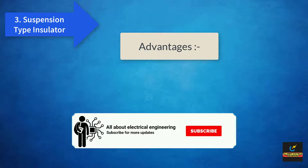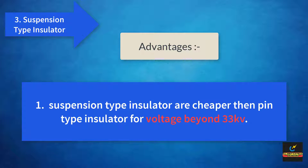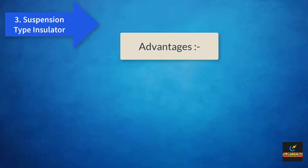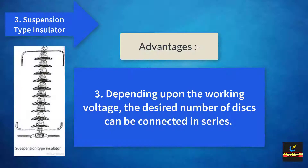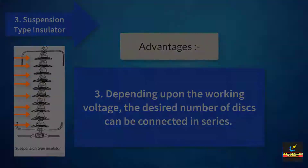Some advantages of suspension type insulators: First, suspension type insulators are cheaper than pin type insulators for voltages beyond 33 kV. Second, if any one disc is damaged, the whole string does not become useless because the damaged disc can be replaced by a good one. Third, depending upon the working voltage, the desired number of discs can be connected in series.